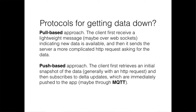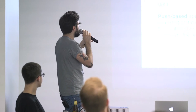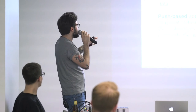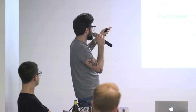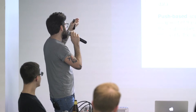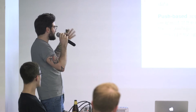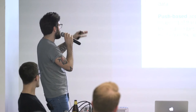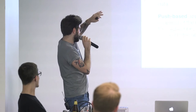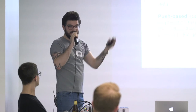How can we make a real-time application? We need to define a protocol that allows us to get data from the server to the client when something changes. There are two approaches: pool-based, where the client receives a lightweight message saying there's new data on the server to fetch; and push-based, which is what I use today — the client gets a full snapshot of data, subscribes to delta updates, and receives those updates as soon as the data changes on the server.